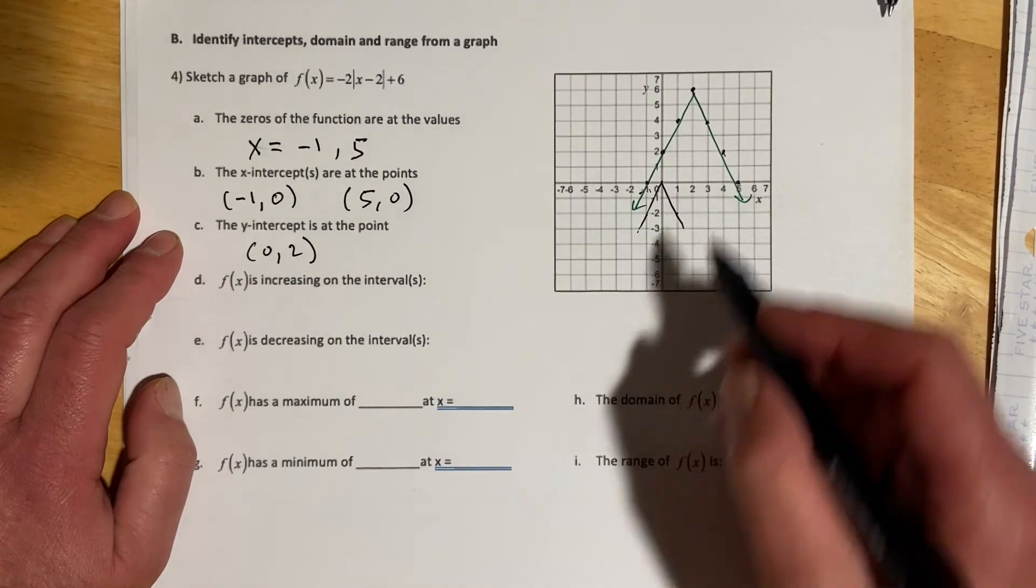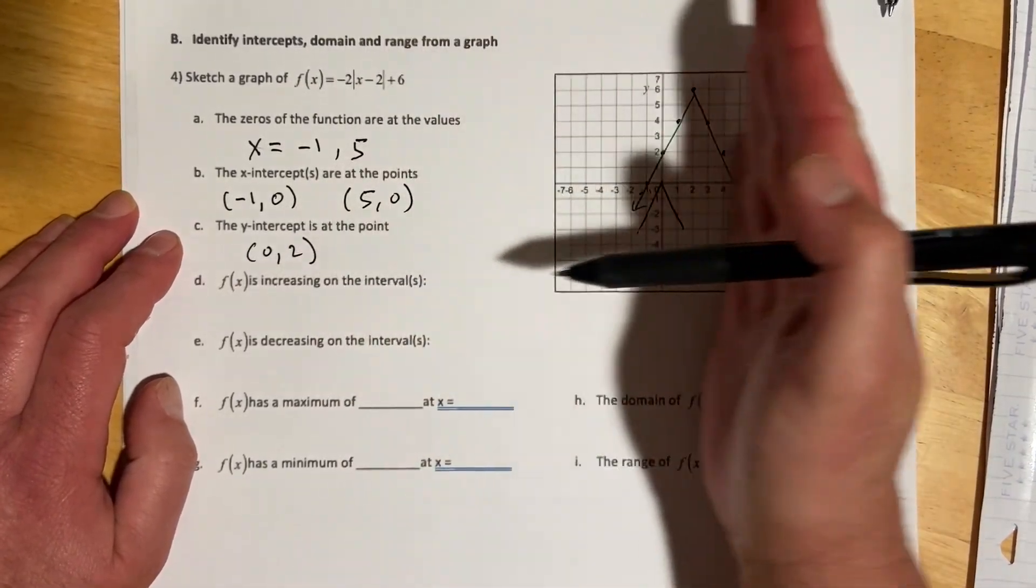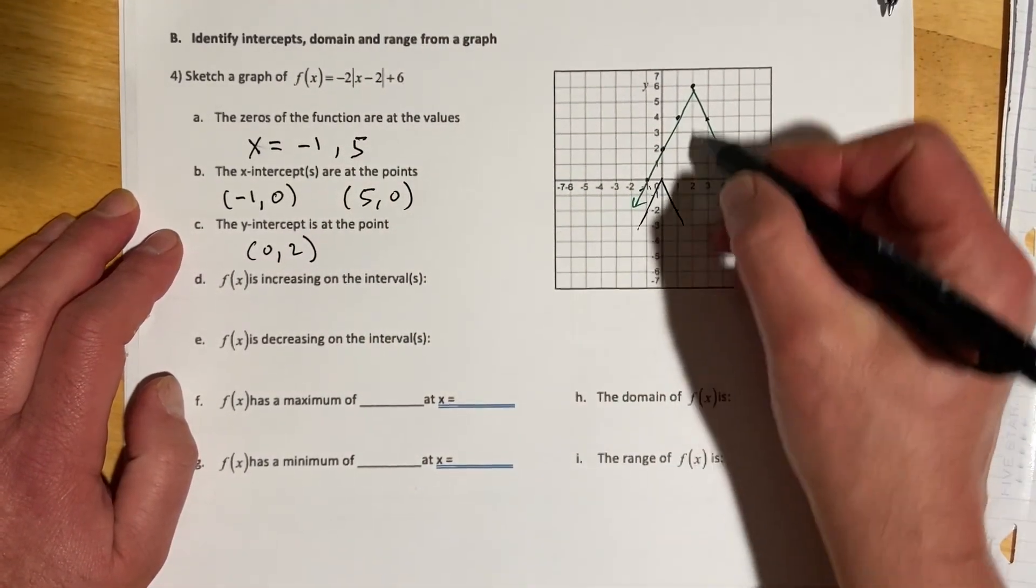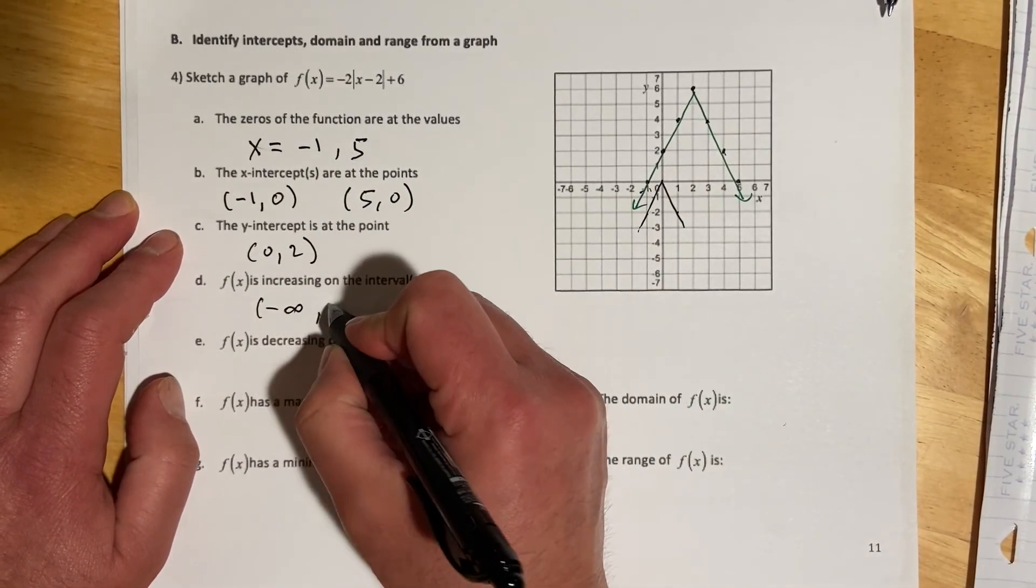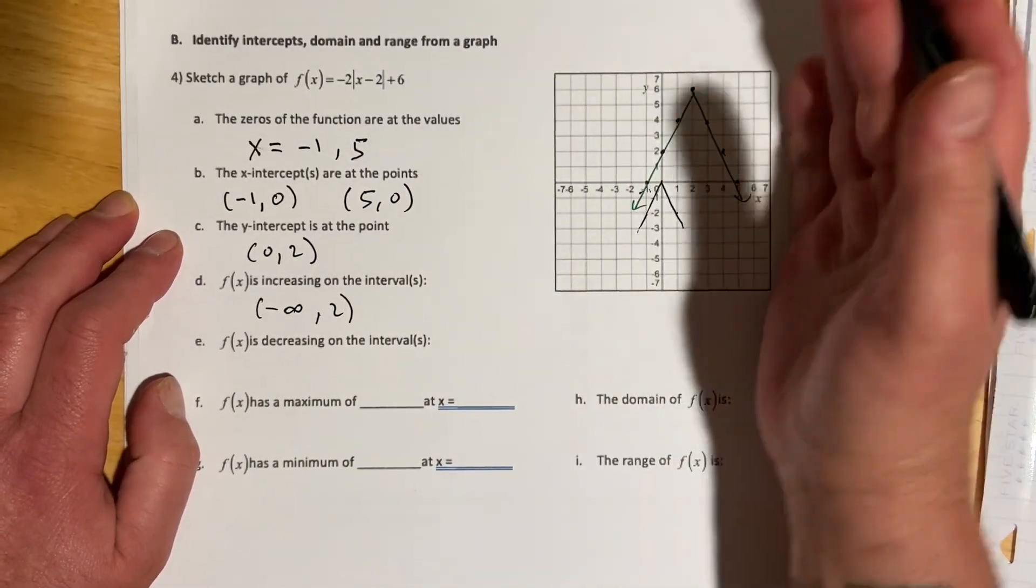f(x) is increasing on the interval from negative infinity up through 2, and then decreasing from 2 to infinity.